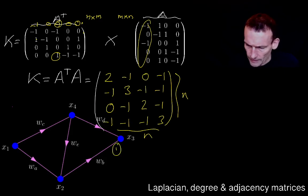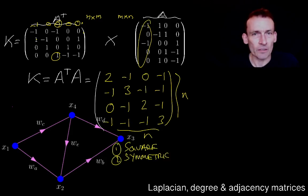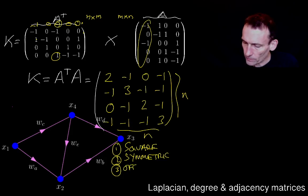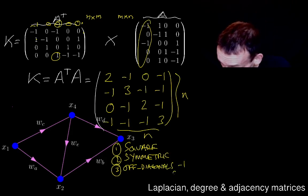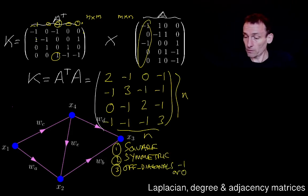There's also a few other things to notice. First of all, it is indeed square. It's symmetric. We knew that before we even computed it. I notice something about this. If you notice the off diagonals, the off diagonals are all minus one. Nothing else, just minus one or zero. The off diagonals are minus one or zero, but I don't see any other numbers.